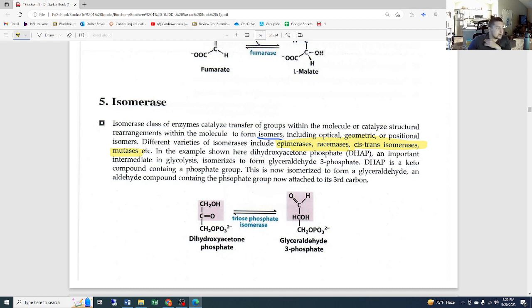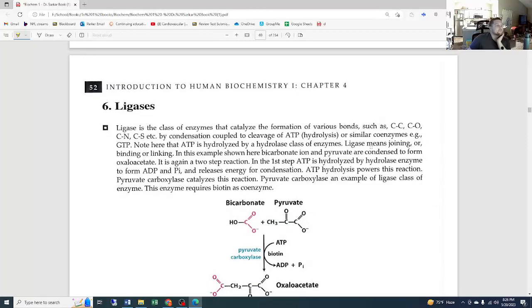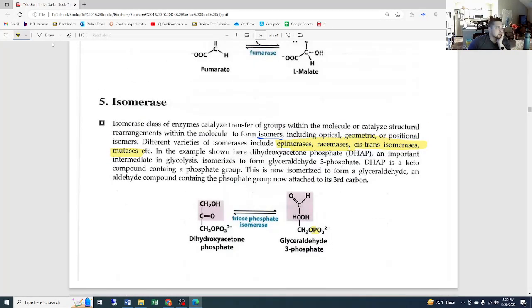In the example shown here, dihydroxyacetone phosphate (DHAP), an important intermediate in glycolysis, isomerizes to form glyceraldehyde-3-phosphate or G3P. DHAP is a keto compound containing a phosphate group. This is now isomerized to form a glyceraldehyde, an aldehyde compound containing the phosphate group now attached to its third carbon. It just rearranges the structure of the enzyme to allow for the other later steps of glycolysis.